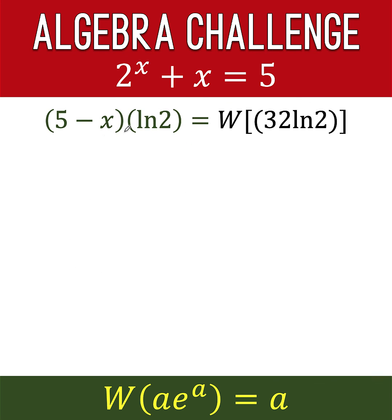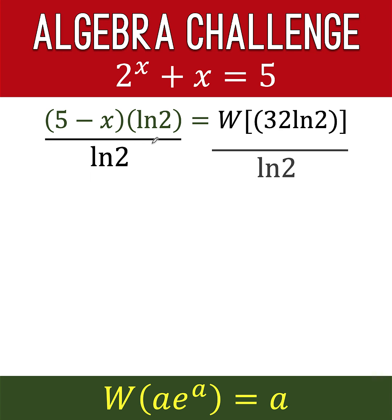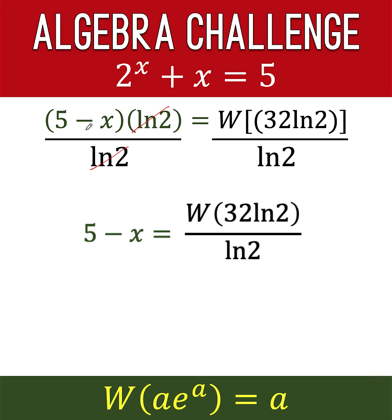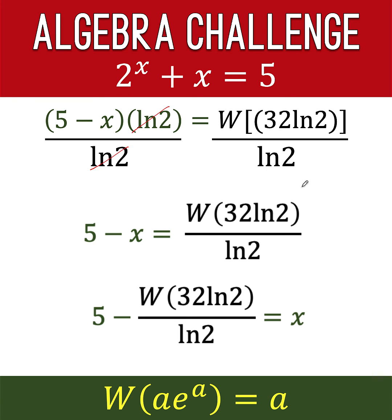Our goal is to solve for x, so we want to isolate x. We divide both sides of the equation by ln 2, cancelling ln 2 over ln 2 to get 1. The left side becomes 5 minus x. We then add x to both sides and subtract the Lambert W expression from both sides to isolate x.